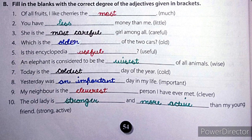Number 3: she is the most careful girl among all — the most careful girl, superlative degree. Number 4: which is the older of the two calves? Here there is comparison between two calves, so we have used older — the comparative degree of old.